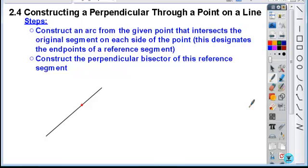So we're going to designate the endpoints of a reference segment here. If I place my compass tip right on my given point, and I'm going to adjust my compass so that it passes through my original segment on each side of that given point, once on the left and once on the right.